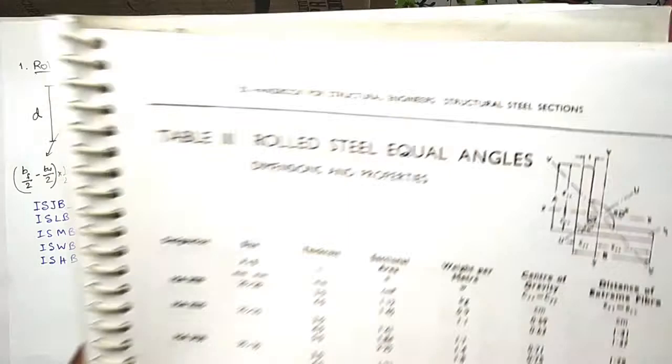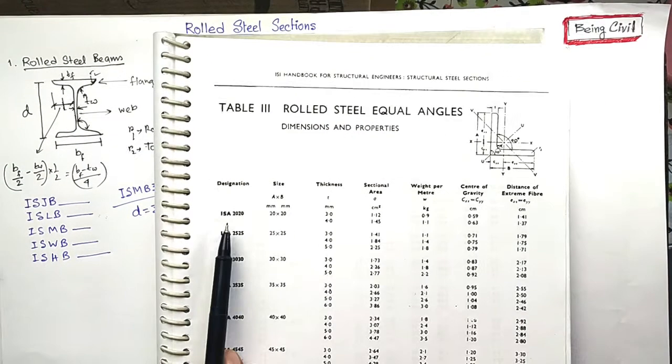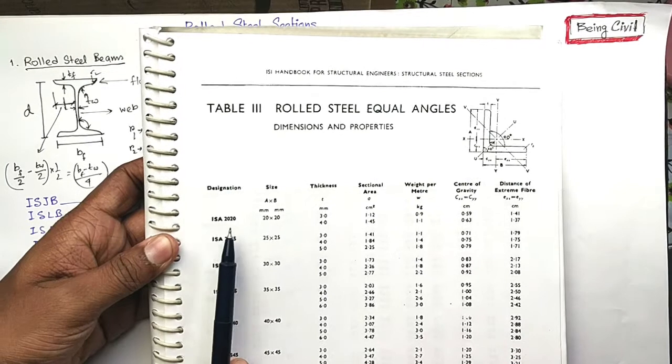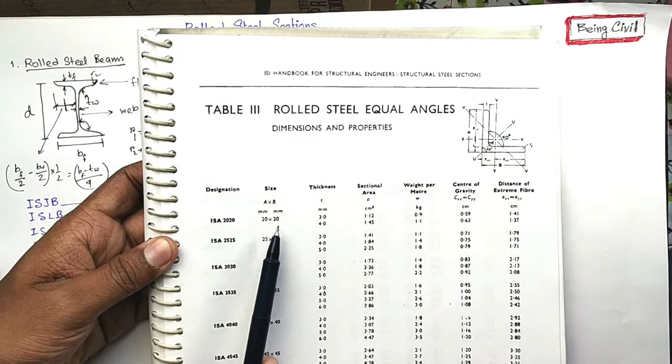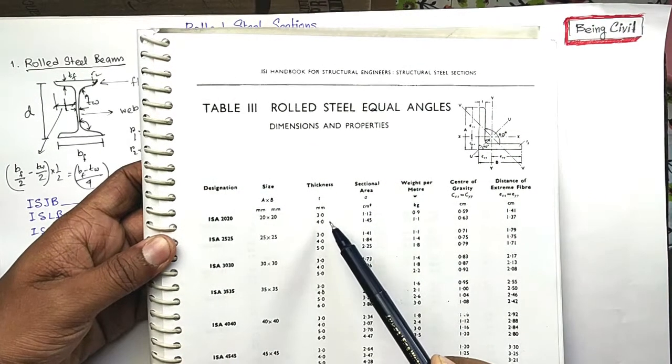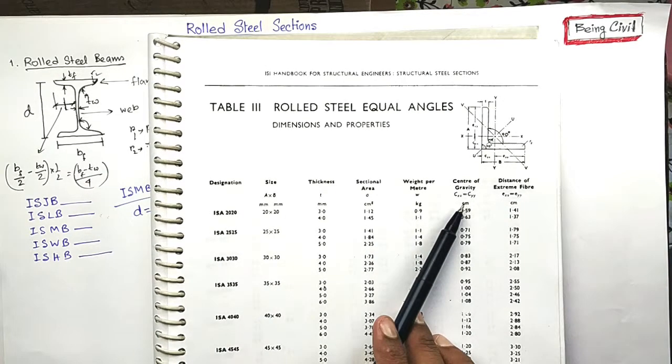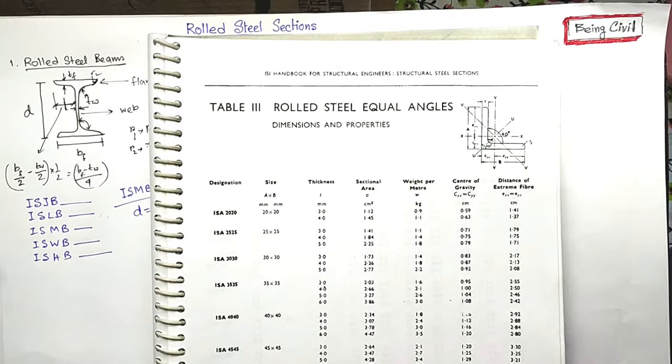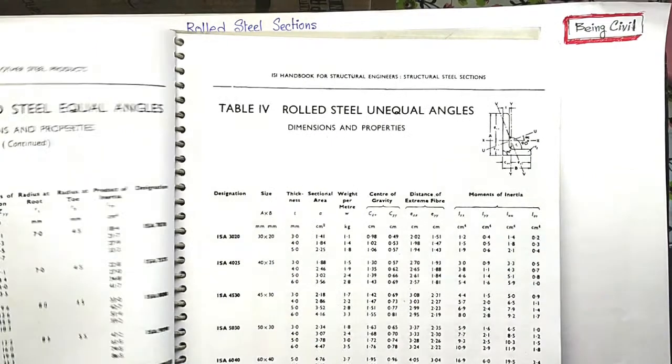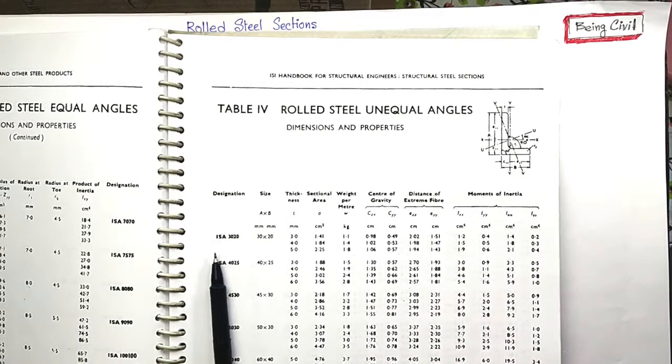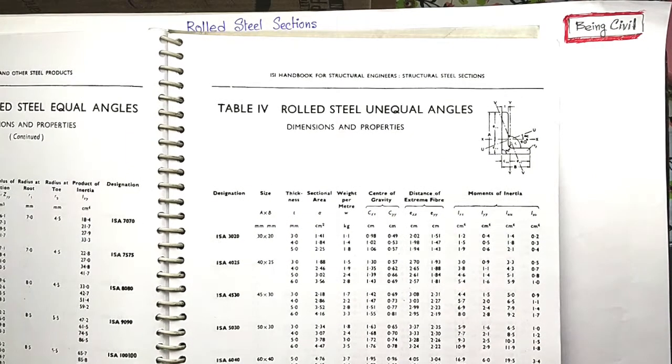You see, this is rolled steel equal angles. Designation, ISA 20 by 20. Size is 20 by 20. And there are two different thickness available, three and four. Section area, unit weight, CG, all are given. And for unequal angles, all the values are given here.